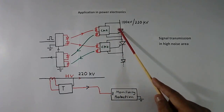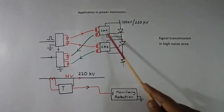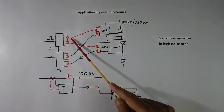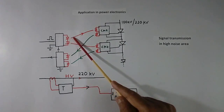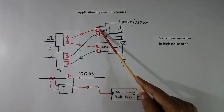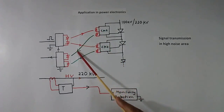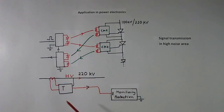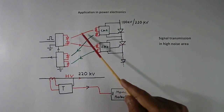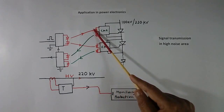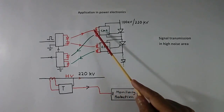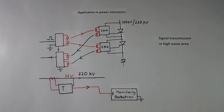So for each thyristor, we use 2 cables — one for transmitting data and one for receiving data. If there are 3 thyristors, there will be 3 cables in the forward direction and 3 in the reverse direction.